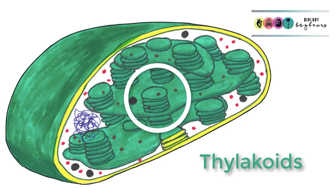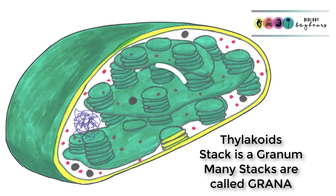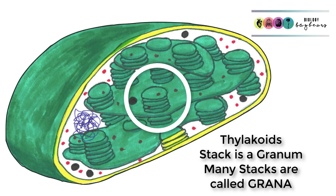Inside the chloroplasts, you see these green disc-like structures, flat structures, and they're called thylakoids. They're usually stacked into groups or bundles known as a granum. When you have a few granum, it's referred to as grana.